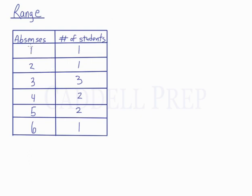So for example, one student was absent once, one student was absent twice, three students were absent three times, two students were absent four times, another two students were absent five times, and one student was absent six times.